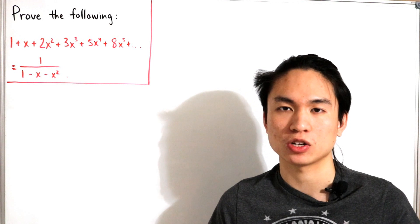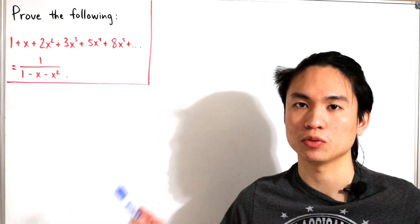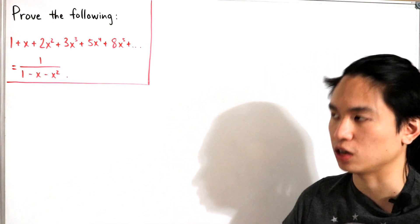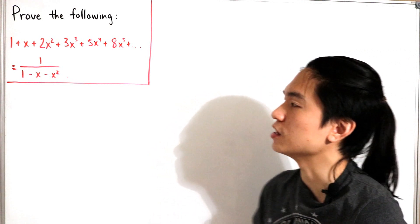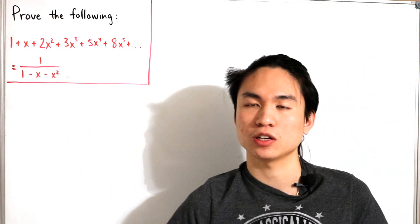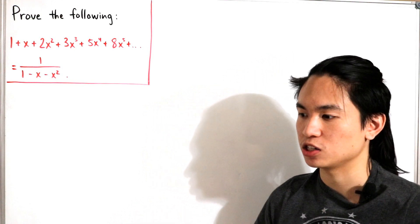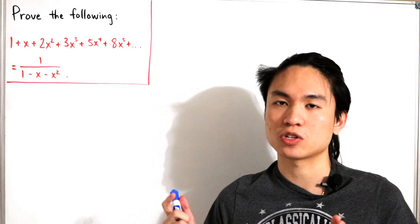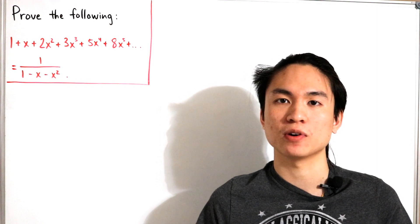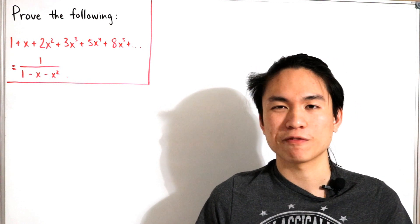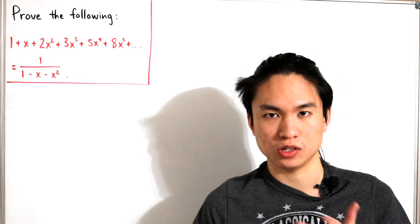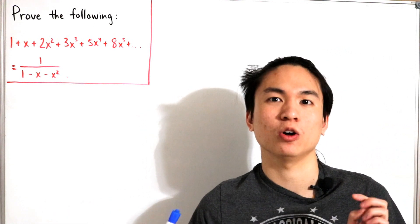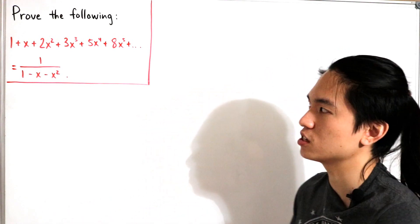You might be wondering how this infinite polynomial expansion is constructed — how the terms keep going to build toward that closed form. If you notice, the coefficients actually represent Fibonacci numbers. Fibonacci numbers are constructed by taking the sum of the two preceding terms. We start with F(0) = 1 and F(1) = 1 — these are called the shifted Fibonacci numbers.